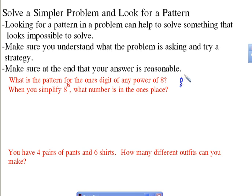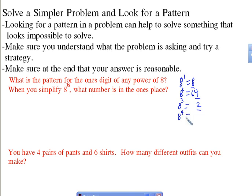Let's see here. 8 to the first power is going to be 8. 8 to the second power is going to be 64. So the pattern so far is 8, 4. 8 to the third power — and you don't need to multiply the whole thing out, you're just worried about that 1's column — is going to be 2, because it's 8 times 4. And 8 to the fourth power is going to end in 6, because 8 times 2 is 16. Now 8 to the fifth power is going to be 8 times 6, which gives 8 again.